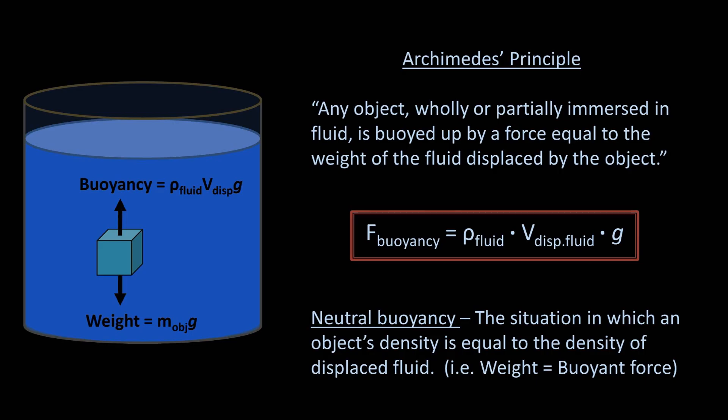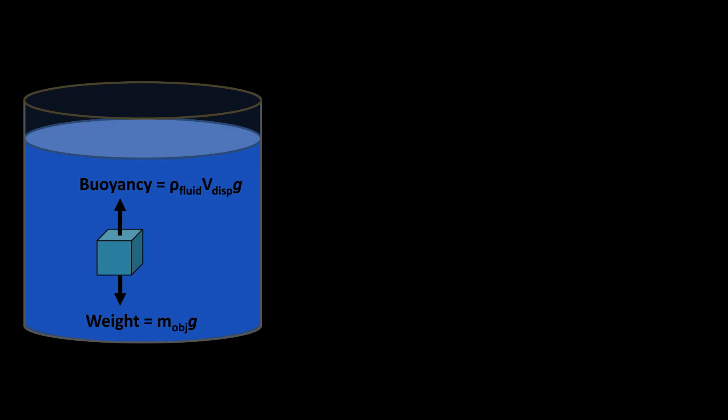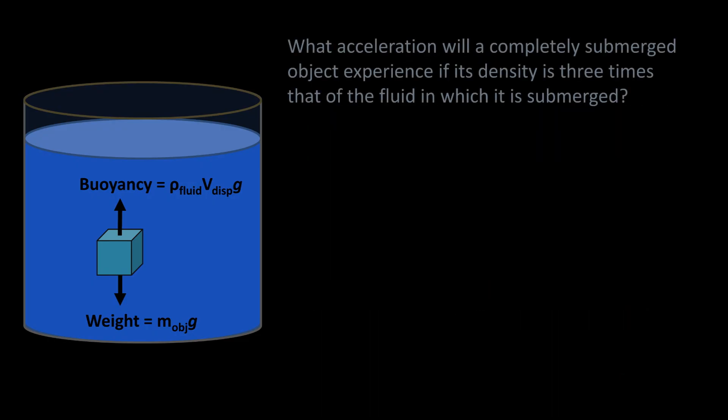Let's look at an example of using buoyancy to solve a physical problem. What acceleration will a completely submerged object experience if its density is three times that of the fluid into which it is submerged? So density of the object equals three times density fluid.